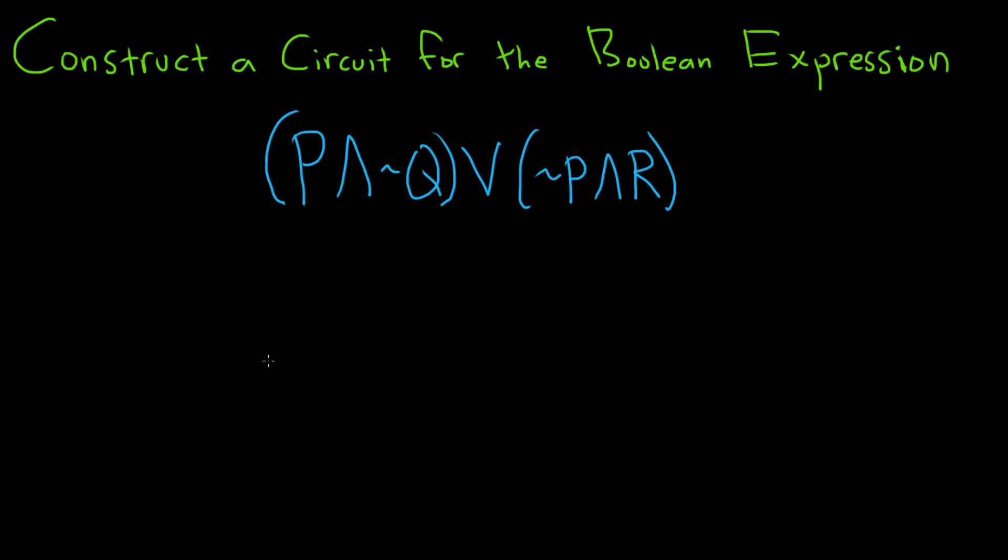In this problem, we're going to construct a circuit for this Boolean expression. So the way to do this is to start with the outermost operation in this expression, which is OR.